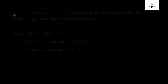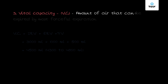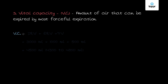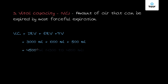Next is the vital capacity, or VC. Vital capacity is the amount of air that can be expired by the most forceful expiration. It is measured by combining the inspiratory reserve volume plus the expiratory reserve volume plus the tidal volume — that is 3000 ml plus 1000 ml plus 500 ml — giving around 4500 ml, and it can range from 4300 ml to 4800 ml. Vital capacity is a very important term for exams.